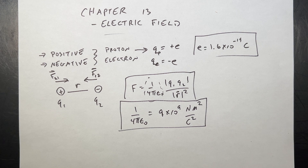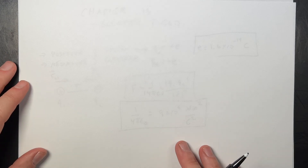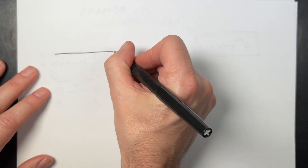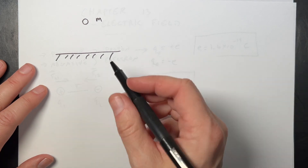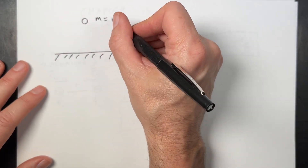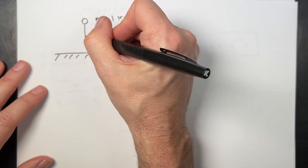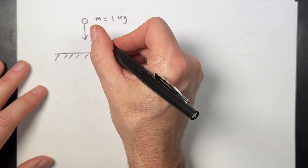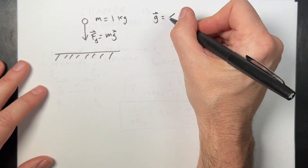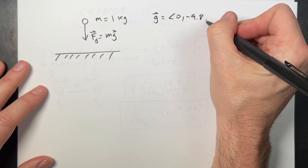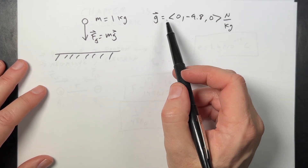Now we need to talk about the electric field. Let me switch back — this is hopefully the second semester of physics, so maybe you took the first semester. Suppose I have a ball with mass M, say 1 kilogram. I can calculate the gravitational force near the surface of the Earth: F_g = mg, where g = (0, −9.8, 0) N/kg.